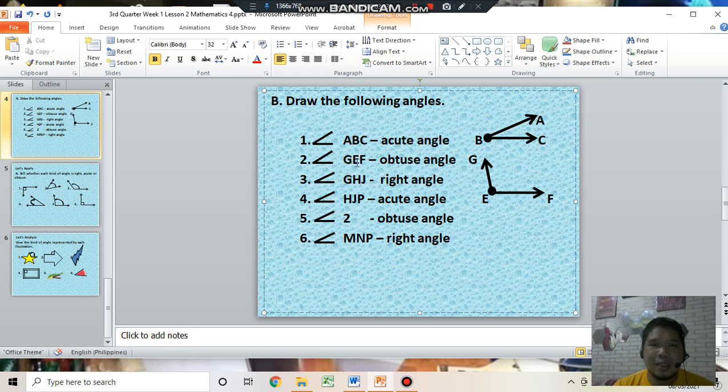Angle G, E, F is an obtuse angle. In this illustration: angle G, E, and F. The vertex is E. Can you answer this number 3, 4, 5, and 6 in your activity sheet or module?